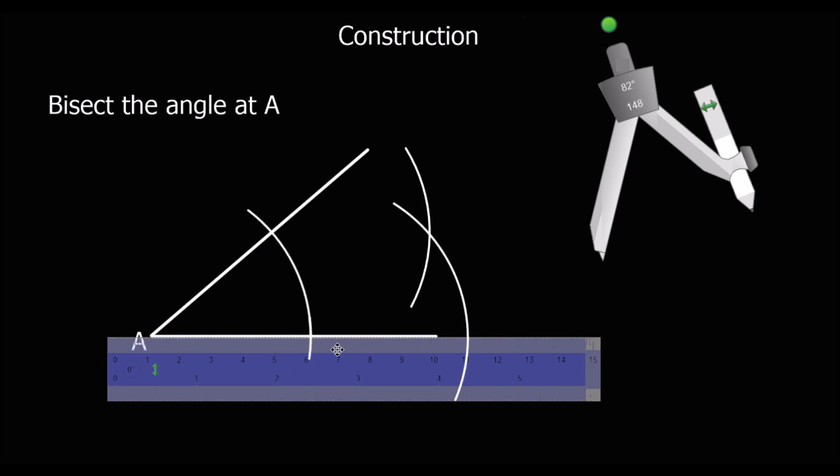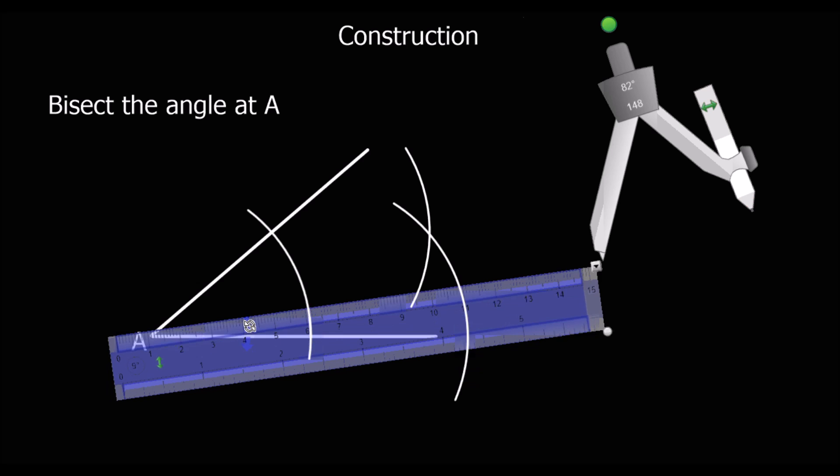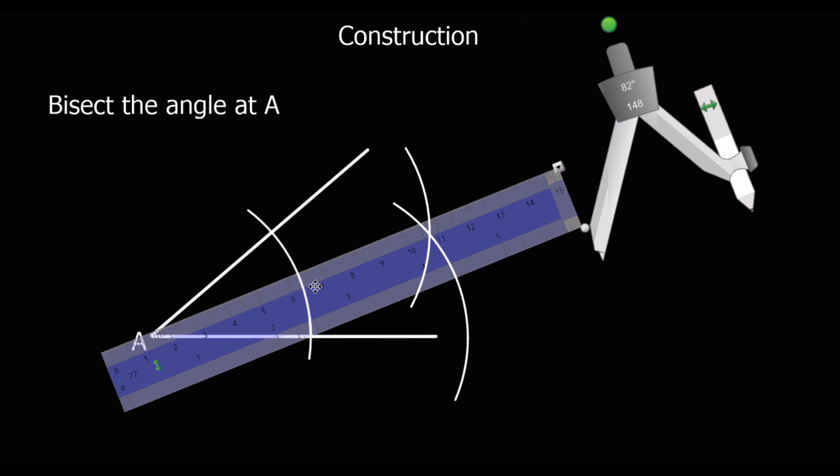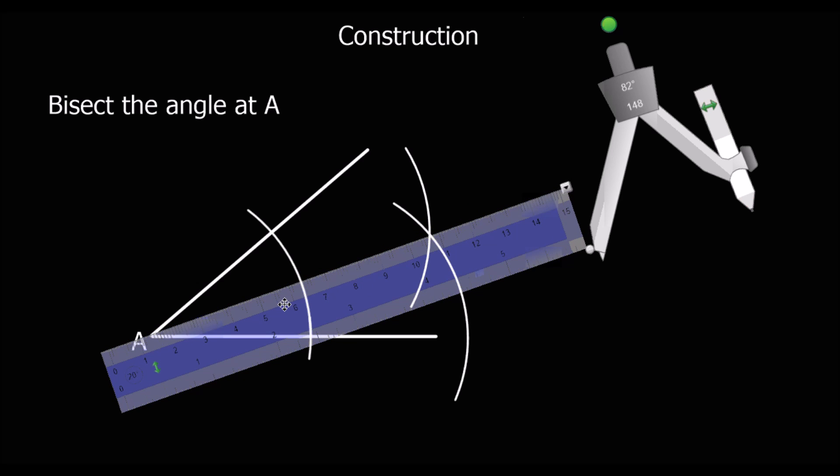We just need to join that one up. We're going to get our ruler and we're going to join up those points. This point to A and there we go.